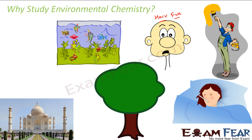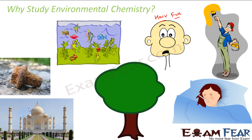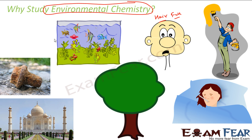Pollution not only causes sickness — it can even cause death. The stones in monuments decay and metals corrode, all because of pollution. It is very critical for us to understand the cause of pollution and why this is happening, so that we can influence governments to create policies that help reduce pollution. To reduce pollution, the first thing is to understand its cause — and that is where environmental chemistry comes in.